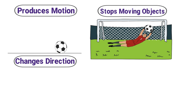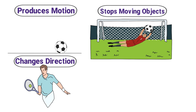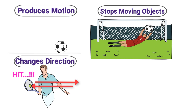Thirdly, force changes the direction of a moving object. Consider a fast tennis ball moving in one direction, hit by your opponent. When you hit the tennis ball, you exert force on it. As a result, the tennis ball moves in the opposite direction. Initially it was moving one way, but due to your force it starts moving in the opposite direction. Remember that force can change the direction of a moving object.